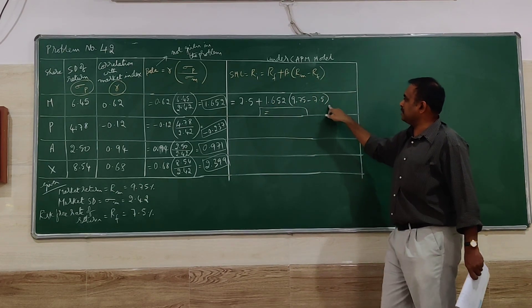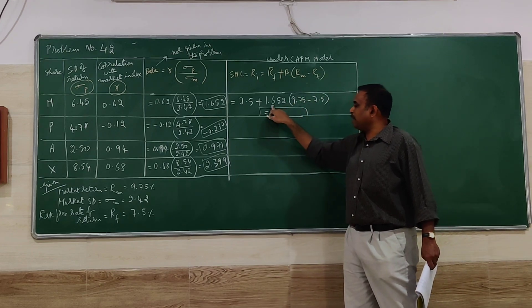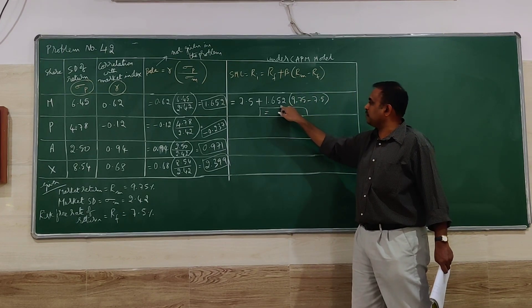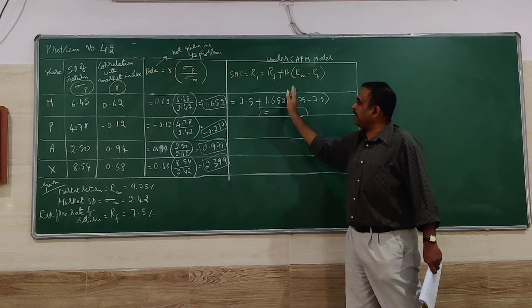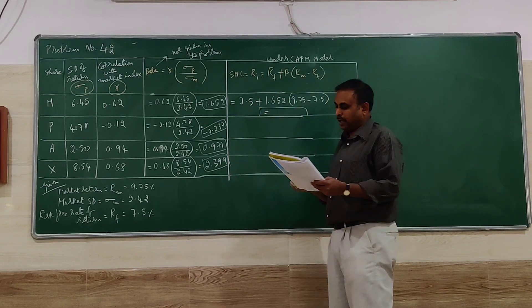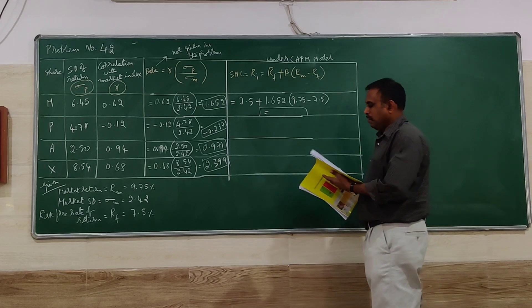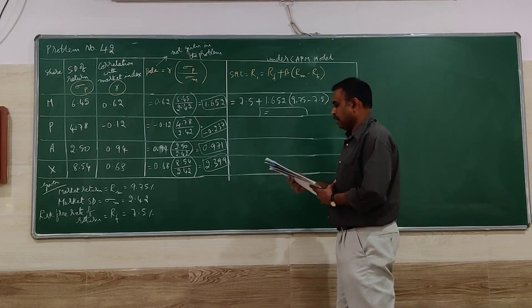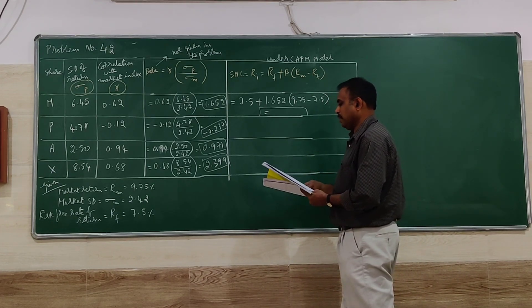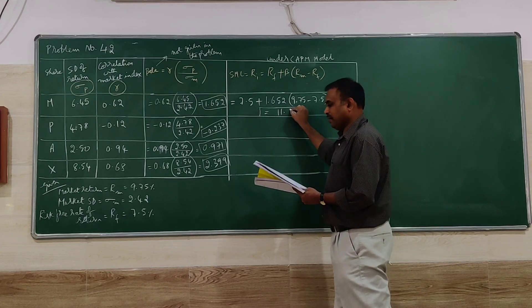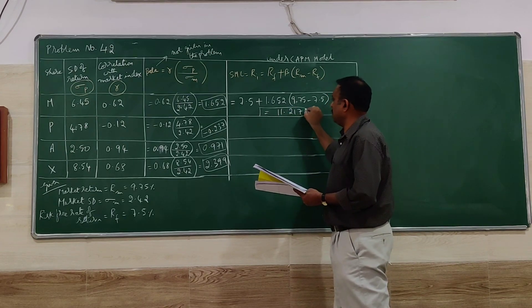RM is 9.75 minus RF 7.5. So we have to simplify: 9.75 minus 7.5, that multiplied by 1.652, whatever value we get added to 7.5. When we simplify, we get a value for this security: 11.217.